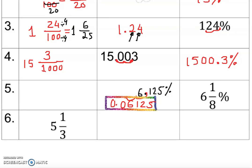Now for the fraction: look at 6.125 — the digits after the decimal are 6125. We count the decimal places: 1, 2, 3, 4, 5 — five digits total — so the denominator is 100000 (1 followed by five zeros). We write 6125 over 100000.